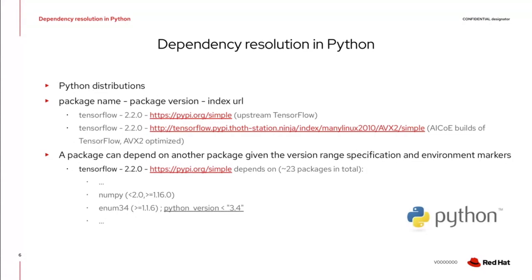For example, TensorFlow is a machine learning library produced by Google, published on PyPI. I picked version TensorFlow 2.2.0. We also produced another build of TensorFlow optimized for AVX instruction sets, which you can retrieve from another source. So PyPI is just one source of distributions, and you can find other sources on the internet.